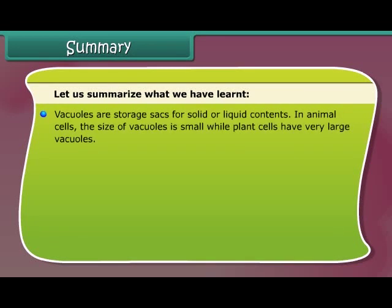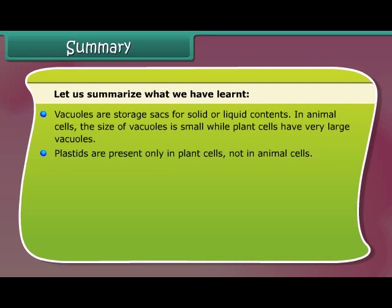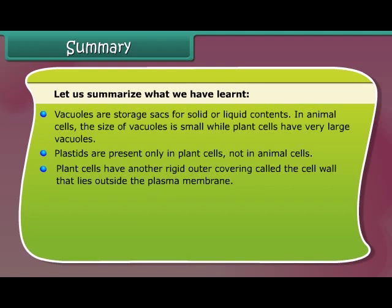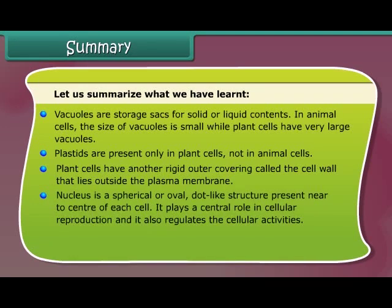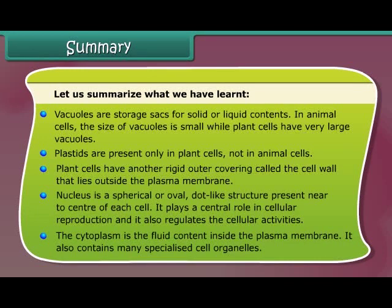Vacuoles are storage sacks for solid or liquid contents. In animal cells, the size of vacuoles is small, while plant cells have very large vacuoles. Plastids are present only in plant cells. Plant cells have another rigid outer covering called the cell wall, lying outside the plasma membrane, mainly composed of cellulose, which provides strength to the cell. The nucleus is a spherical or oval dot-like structure near the center of each cell; it plays a central role in cellular reproduction and regulates cellular activities. The cytoplasm is the fluid content inside the plasma membrane and contains many specialized cell organelles.